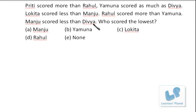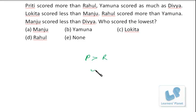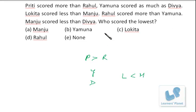We have to find out who has scored the lowest. Preeti scored more than Rahul — I write the details in ascending order. Yamuna scored as much as Divya, so Yamuna and Divya are on the same level. Lokita scored less than Manju.